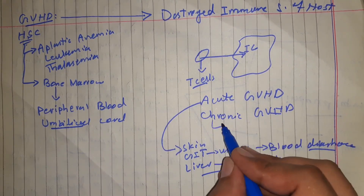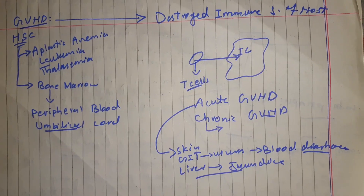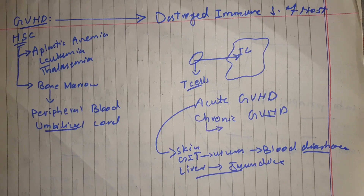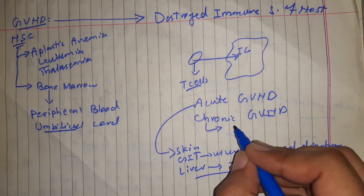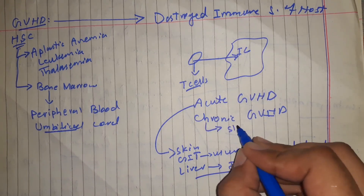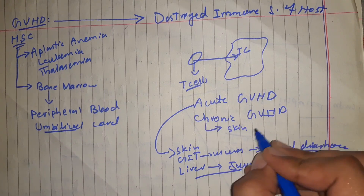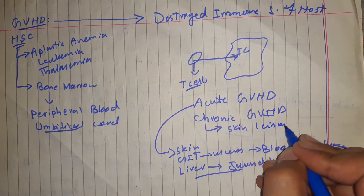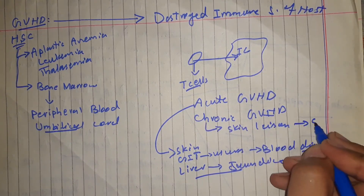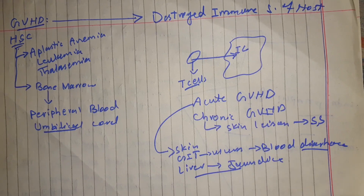Chronic graft versus host disease develops later, within months. It leads to generalized skin manifestations and skin lesions similar to systemic sclerosis, and it can also mimic other autoimmune diseases.